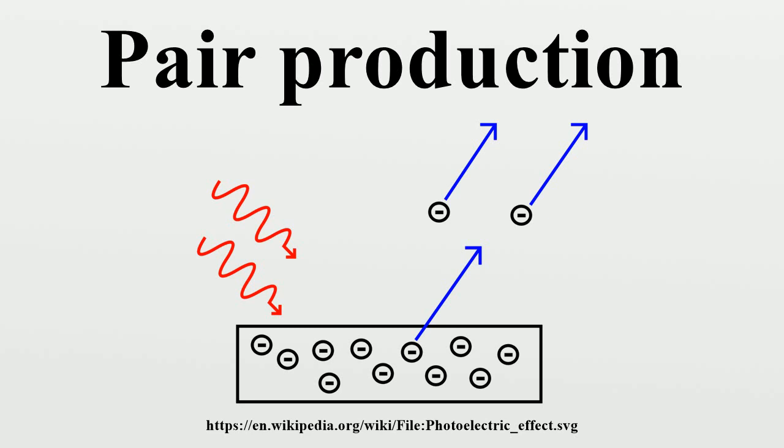The photon must be near a nucleus in order to satisfy conservation of momentum, as an electron-positron pair producing in free space cannot both satisfy conservation of energy and momentum. Because of this, when pair production occurs, the atomic nucleus receives some recoil. The reverse of this process is electron-positron annihilation.